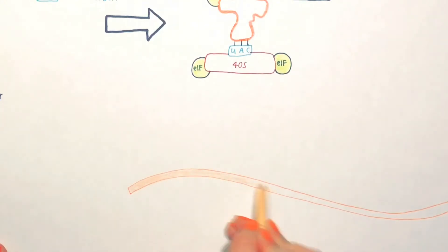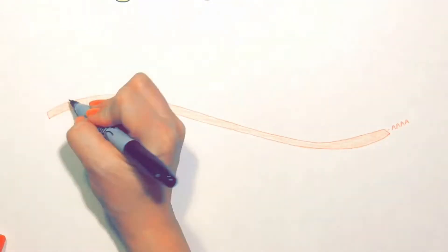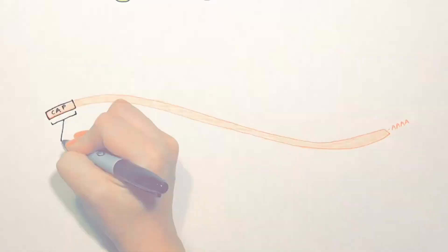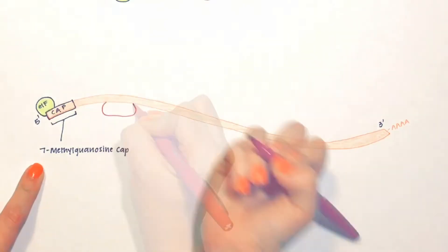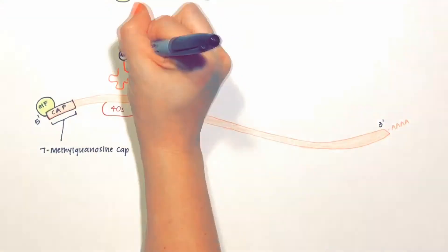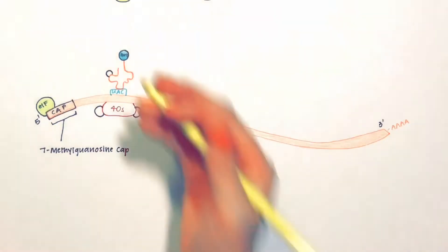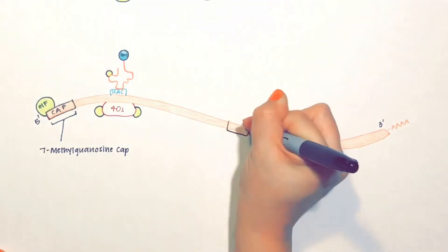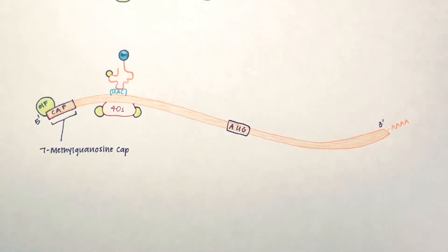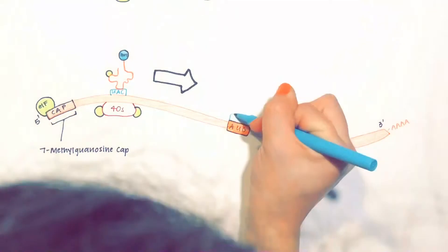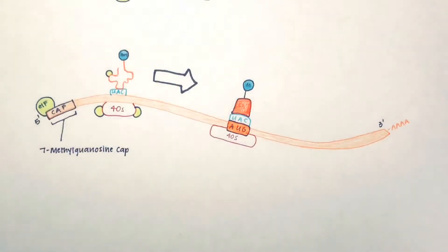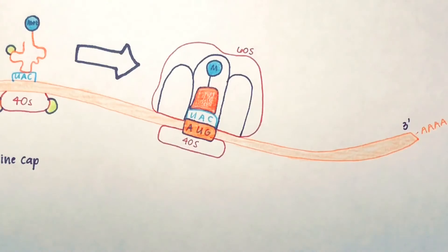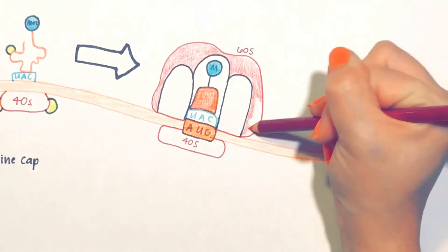How are eukaryotic mRNAs recognized by this pre-initiation complex? The mRNA is recognized by initiation factor eIF4, which is a multi-protein complex that recognizes the 7-methylguanosine cap at the 5' end of the mRNA. This initiation factor then facilitates the binding of the 5' end of the mRNA to the 40S ribosomal subunit. Once attached, it begins to scan for the start codon AUG, which follows a set of guidelines known as Kozak's rules. At the start codon, the large subunit then attaches.